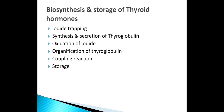First is iodide trapping along with synthesis and secretion of thyroglobulin. Second is oxidation of iodide. Then followed by organification: elemental iodine combines at the third position of tyrosine residues to form MIT (monoiodotyrosine). Addition of another iodine to MIT at the fifth position of tyrosine results in the formation of DIT (diiodotyrosine). Two DIT condense to form T4; one MIT plus one DIT condense to form T3. This is called the coupling reaction.